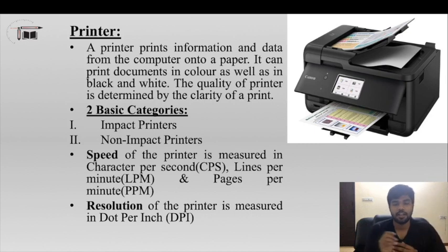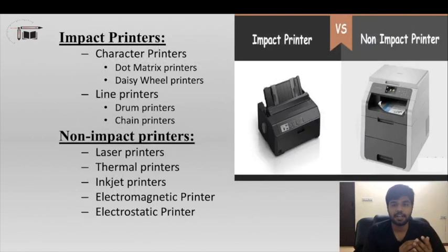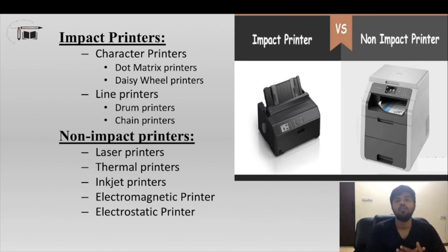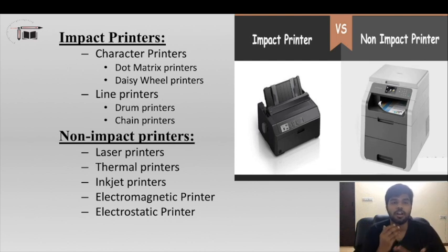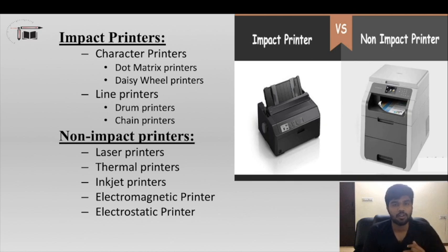Impact printers can be further divided into character printers, which print one character at a time, and line printers, which print one line at a time. Examples include dot matrix printers and daisy wheel printers as character printers, and drum printers and chain printers as line printers.